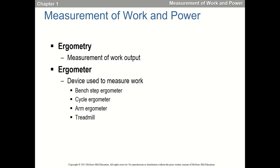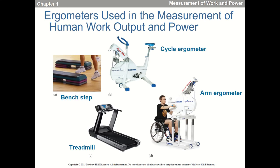We have a couple of different ergometers. In the lab, probably the two most important are the cycle ergometer and the arm ergometer — leg cycle and arm cycle. We can also measure work on a bench step and on treadmills, though we probably won't do those as much. Tomorrow in lab, one person in your group will run up the stairs of the Williams Center twice and we'll measure power. Not too many exercise physiologists use bench step ergometry for measuring things these days.